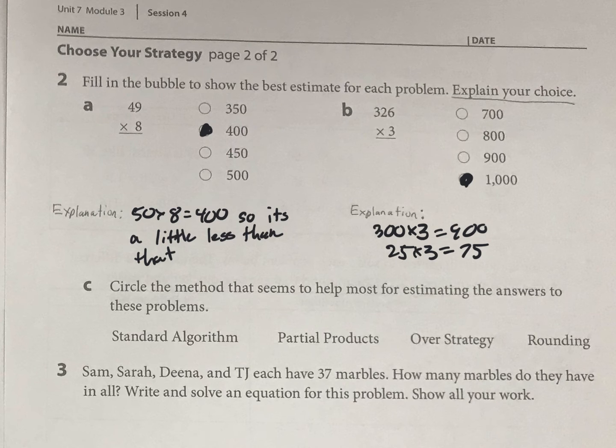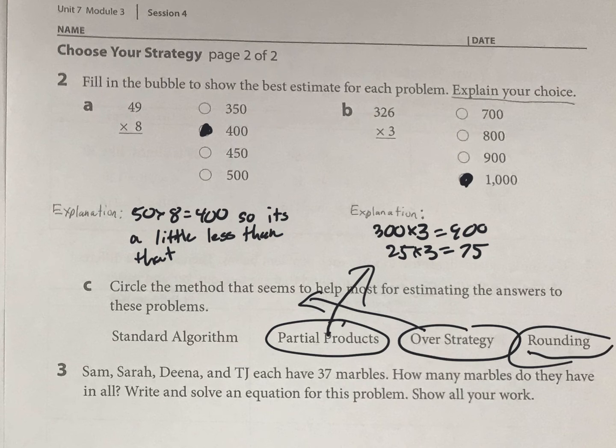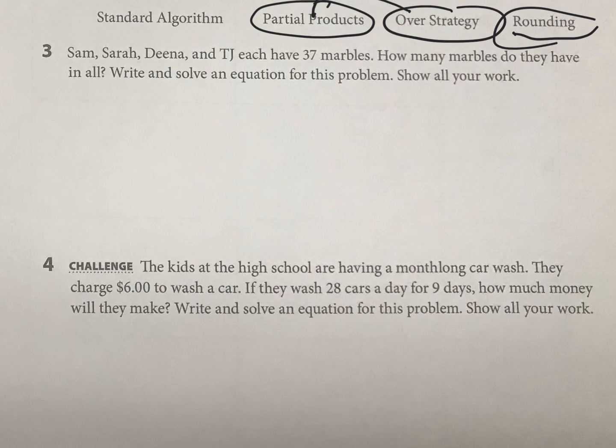So what method did I use? Well, I used partial products here, right? And then I used the over strategy here. And I also did a little bit of rounding. I rounded 49 to 50. So I'm kind of using everything. All right. Let's move on down to some of these stories here.